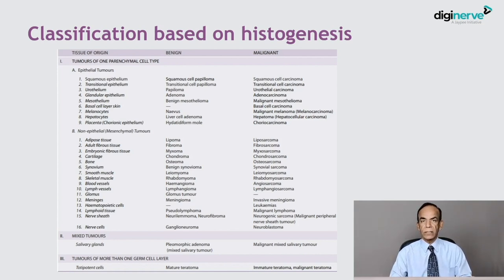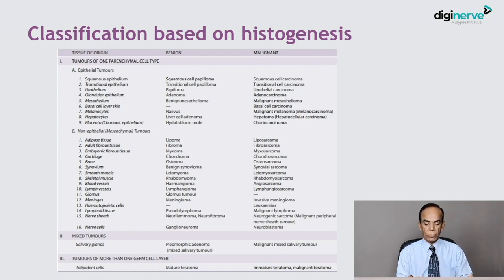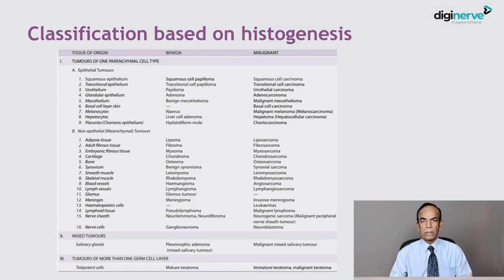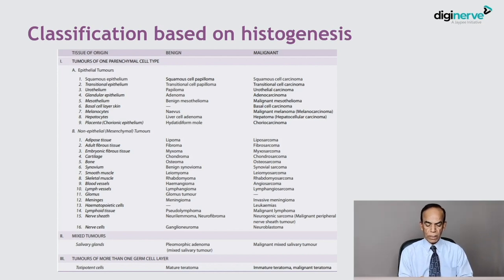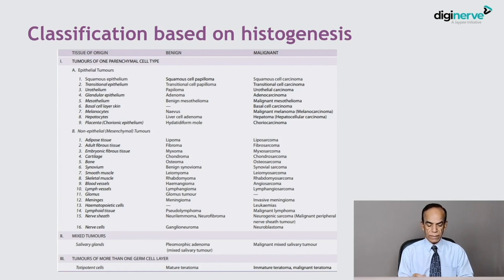Gestational trophoblastic tumors include hydatidiform mole (benign) and choriocarcinoma (malignant). Non-epithelial or mesenchymal tumors follow the convention of cell-of-origin plus '-oma' for benign and '-sarcoma' for malignant: lipoma and liposarcoma; fibroma and fibrosarcoma; embryonic fibrous tissue gives myxoma and myxosarcoma; cartilage tumors give chondroma and chondrosarcoma; bone tumors include osteoma (benign) and osteosarcoma (malignant).